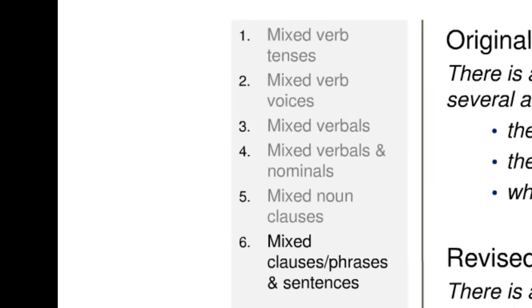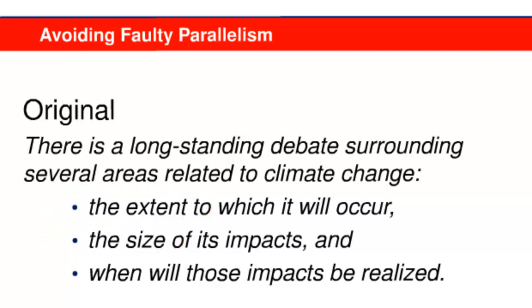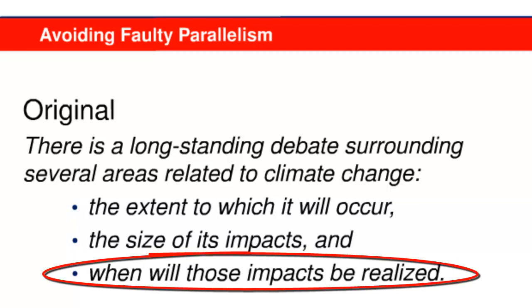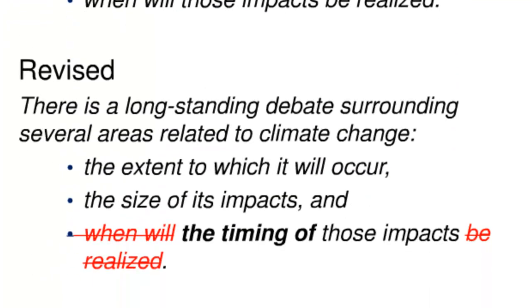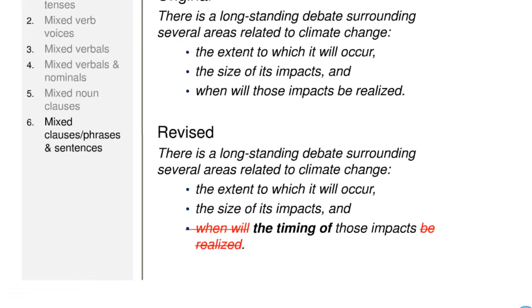The sixth and final cause of faulty parallelism is mixing full sentences with incomplete ones — in other words, phrases or clauses. Consider the report passage shown here. The first and second items in the bulleted list are phrases beginning with the extent and the size, while the third item is a complete sentence: When will those impacts be realized? In the revised version, the writer converts the third item into a phrase parallel in structure to the first two, now beginning with the timing. The writer could have also revised the first two items into complete sentences.